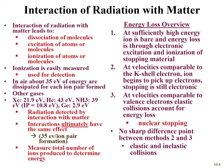In air, about 35 eV of energy are dissipated for each ion pair formed. In other gases this varies: xenon is close to 20 eV, ammonia around 40 eV, and helium is on the order of 43 eV. Germanium, used in gamma detectors, has close to 3 eV. By measuring the total number of ions produced, you can determine the energy of the particle that comes in.